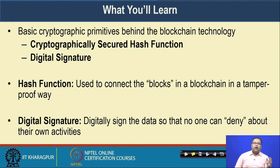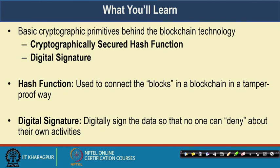Hash functions are used to connect different blocks one after another — individual blocks of a blockchain are connected with each other through hash functions. We will also look into digital signatures, which are used for making the blockchain tamper-proof and resilient against non-repudiation attacks, where once a party makes a transaction, he or she will not be able to deny that the transaction was made.